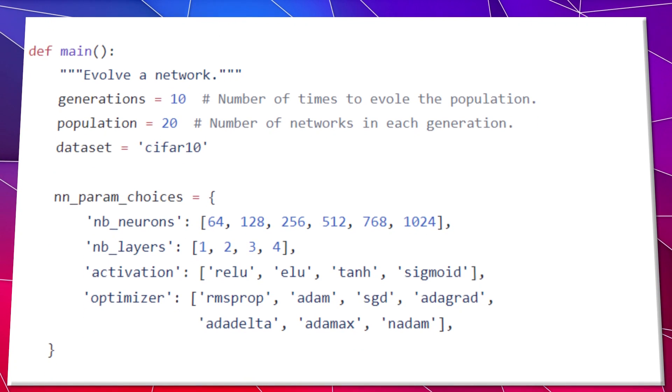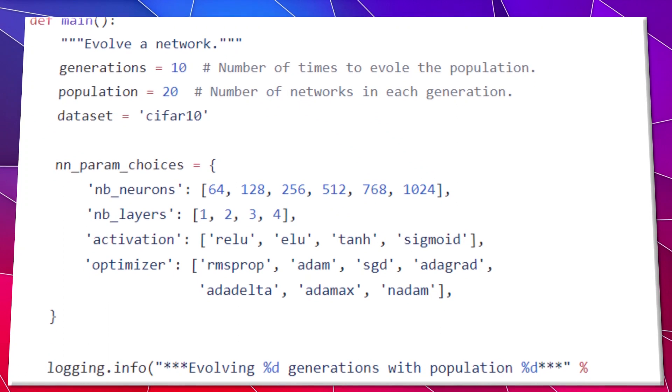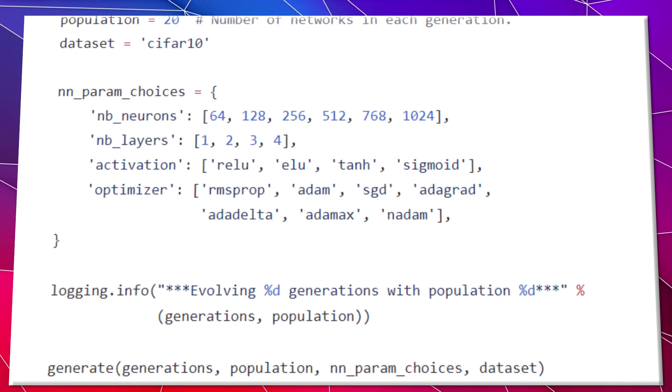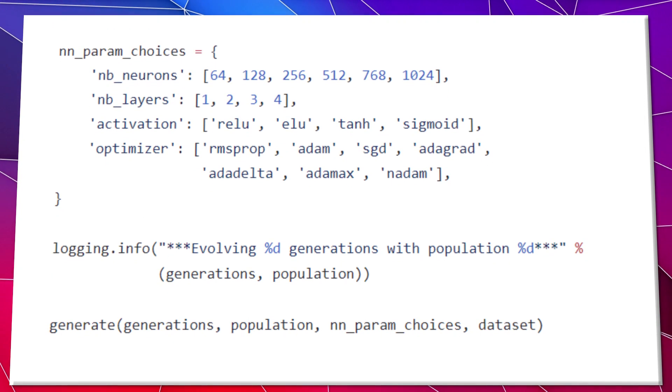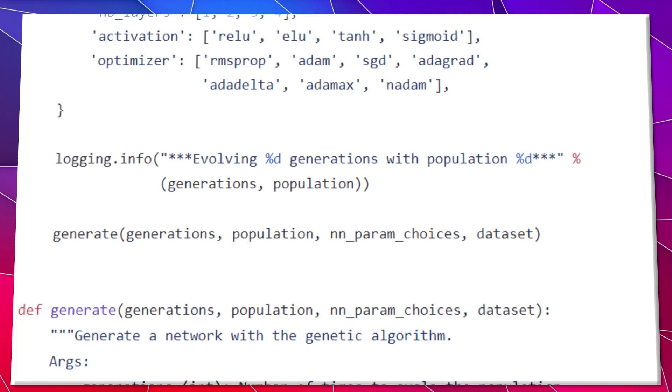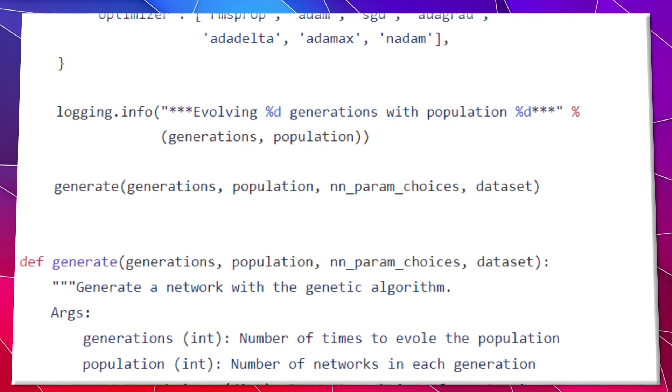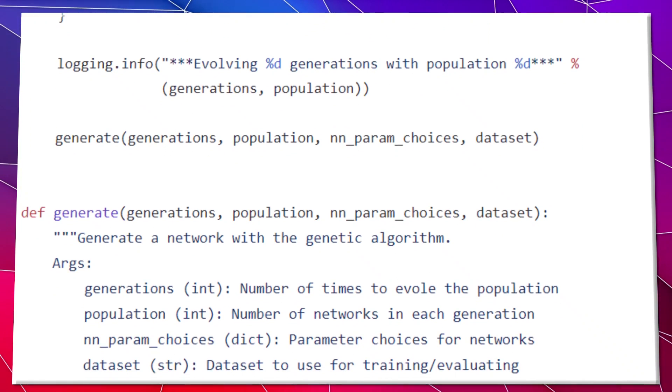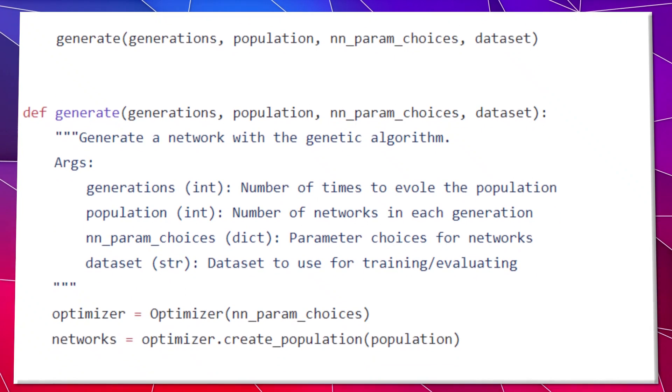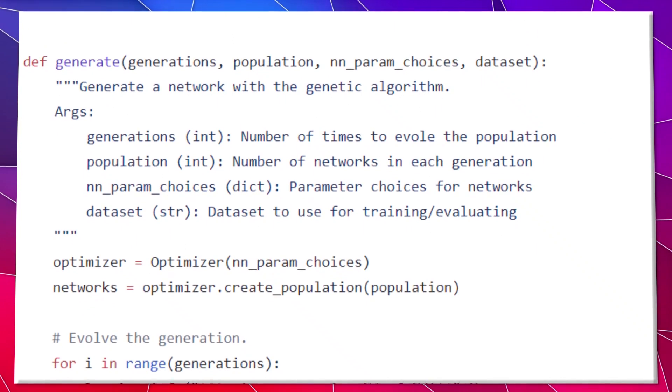We'll need to train the weights of each network using an image data set, then benchmark how well it performs at classifying test data. We'll use its classification accuracy on the test set as our fitness function. If we sort all of our networks by their accuracy, we can see which ones are the lowest performing and remove them. We'll only select the top scoring networks to be a part of the next generation.